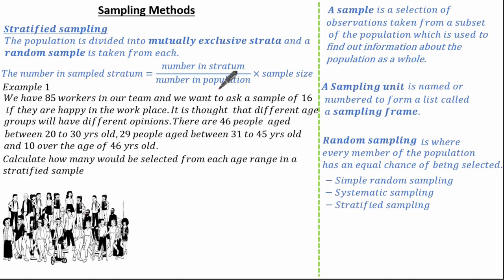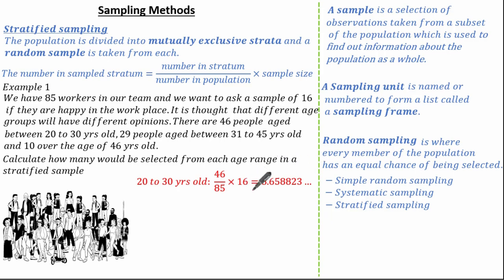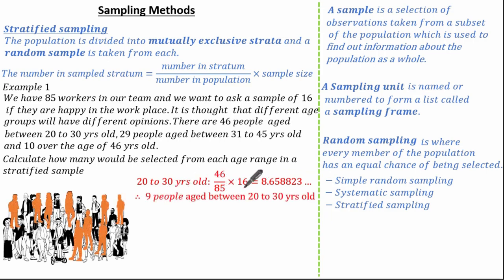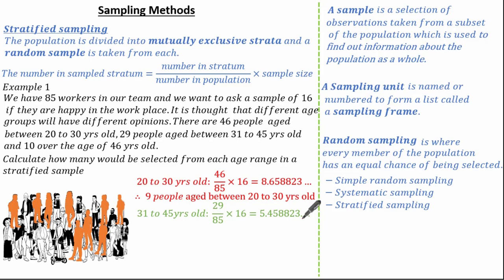Applying the formula for the 20–30 age group: 46 out of 85, multiplied by a sample of 16, gives 8.6588. Since we can't have a decimal person, we round to 9 people from the 20–30 age group. For the 31–45 age group: 29 out of 85, multiplied by 16, gives 5.4588, which rounds to 5 people from the 31–45 age group.